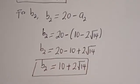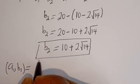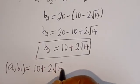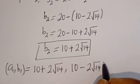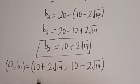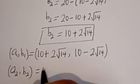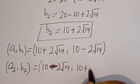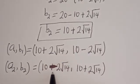Therefore the solution pairs are: (A₁, B₁) equals (10 plus 2 root 14, 10 minus 2 root 14), and (A₂, B₂) equals (10 minus 2 root 14, 10 plus 2 root 14). Notice that A₁ equals B₂ and B₁ equals A₂.